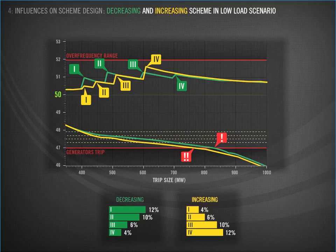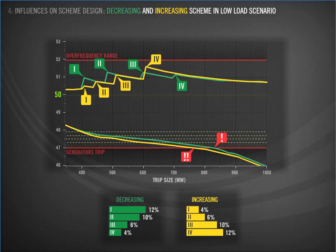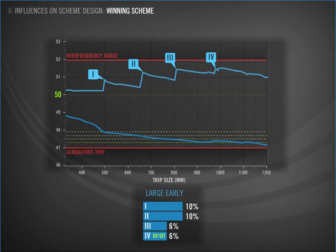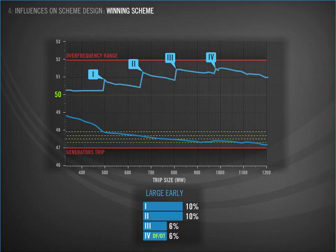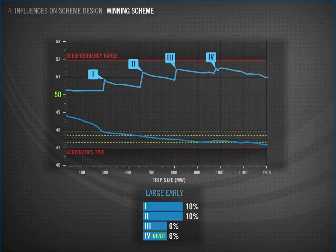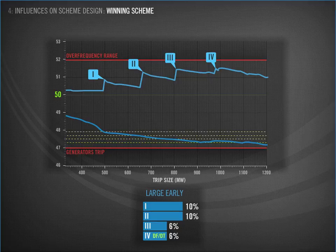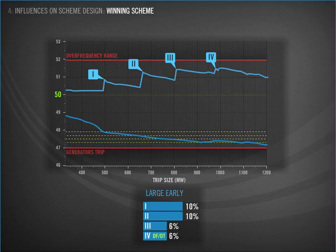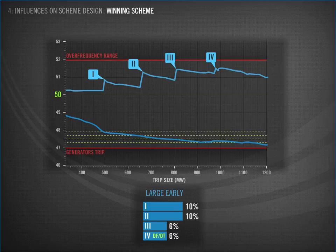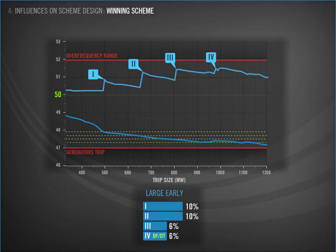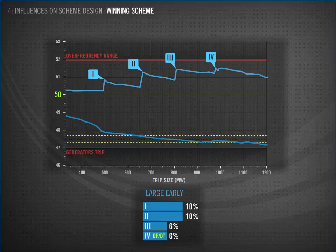This sawtooth analysis allowed us to assess the different scheme designs we discussed earlier. We could assess each scheme based on the points where it maintains the frequency between 47 and 52 Hz. Here's the winning scheme. Four blocks of 10, 10, 6 and 6%. You'll notice that we have included DFDT on block four. Adding DFDT to the last block of the strongest performing scheme gives us an additional weapon to deal with events where the frequency is falling fast, for those large events where it is expected that all four AWFLS blocks may be required. You will recall that when DFDT triggers, it increases the minimum frequency and gives us more distance from the under-frequency limit. Although no scheme can give coverage for every event, this winning scheme allows us to stay within 47 to 52 Hz for a wider range of disturbances. This was the strongest performing under-frequency scheme.